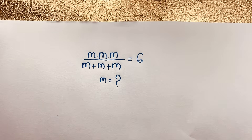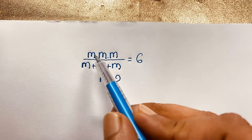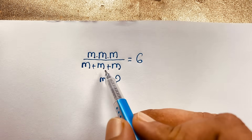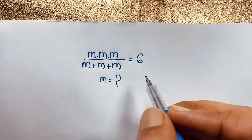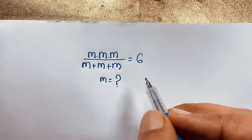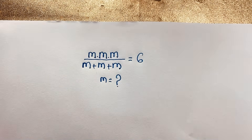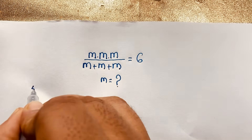Hello everyone, welcome to my YouTube channel. Today we solve an easy math problem: m times m times m over m plus m plus m is equal to 6. What is m? How to solve this interesting math problem? I solve this question using an easy method here — our math solution.